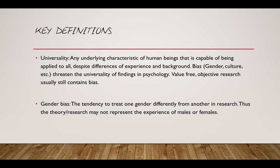Short-term memory capacity is thought to be 7 plus or minus 2 items. Certainly that's true amongst the genders; however, that may not be true amongst cultures. There have been cultures discovered, for example, that have no concept of number, or a very poorly developed concept of number. How would their short-term memory work?